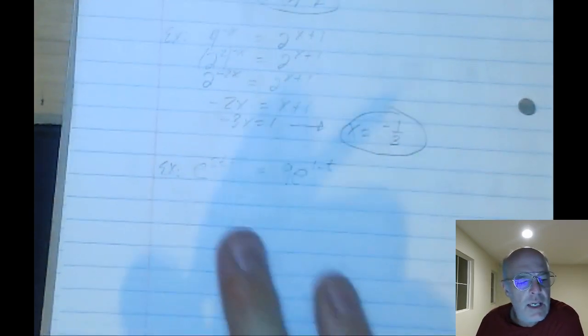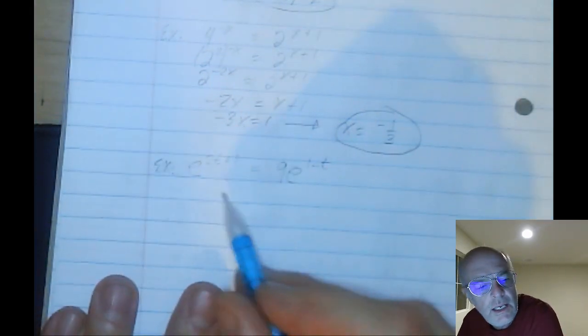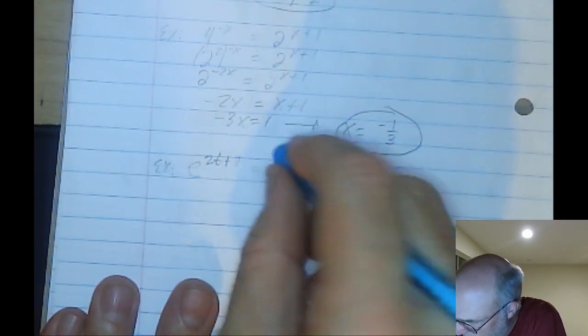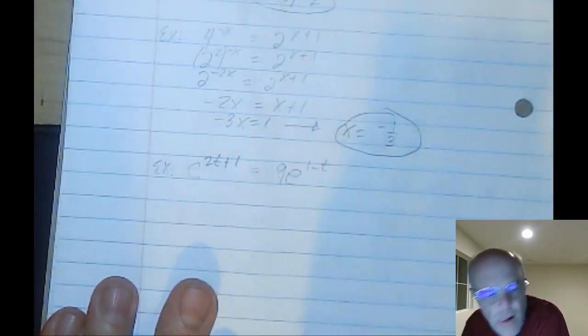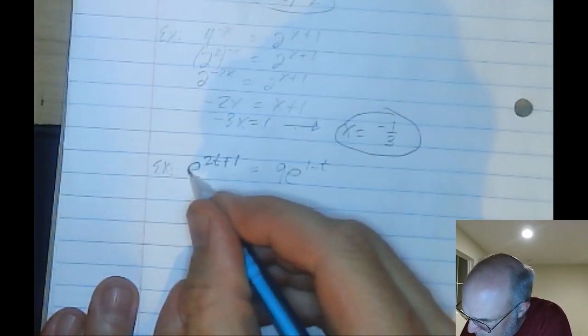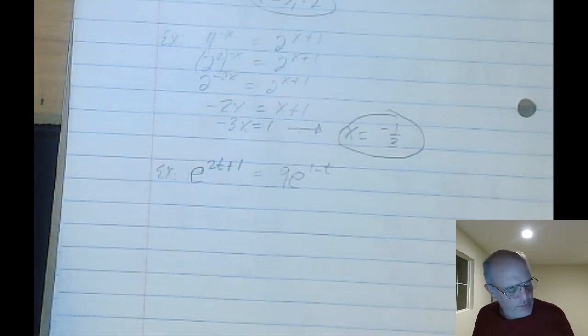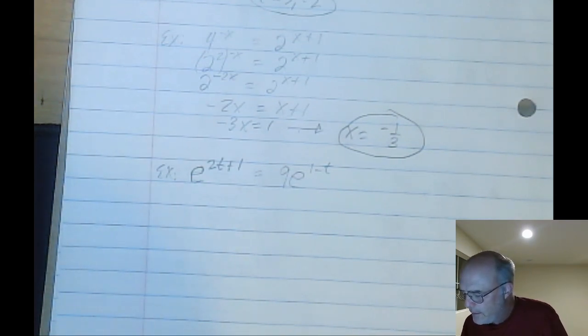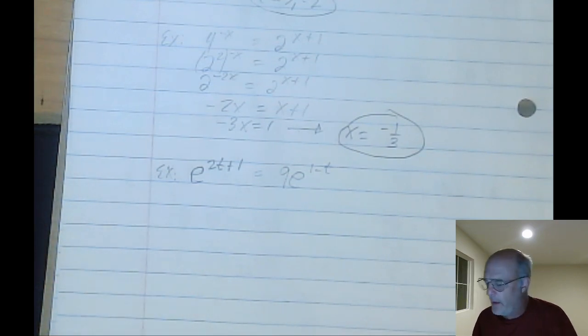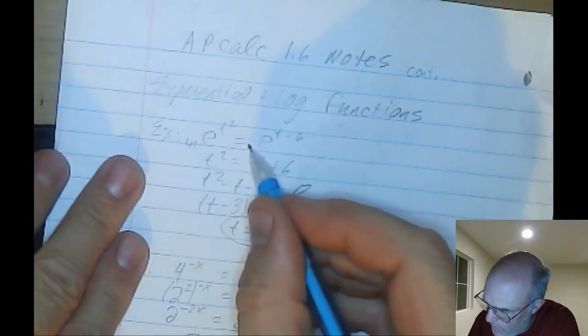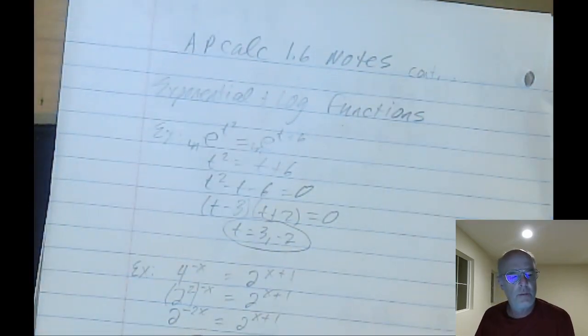Now this one is e to the 2t plus 1 equals 9e to the 1 minus t. Now this time you have a coefficient in front of your E. So you're still going to take the natural log of both sides. By the way, technically what I did was I took the natural log of both sides, which causes the exponents to come down.